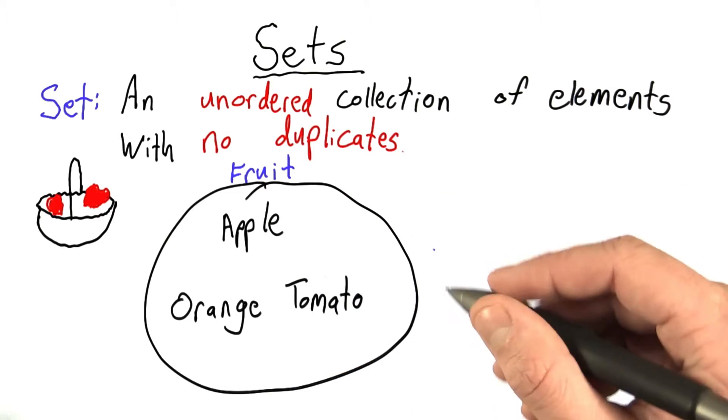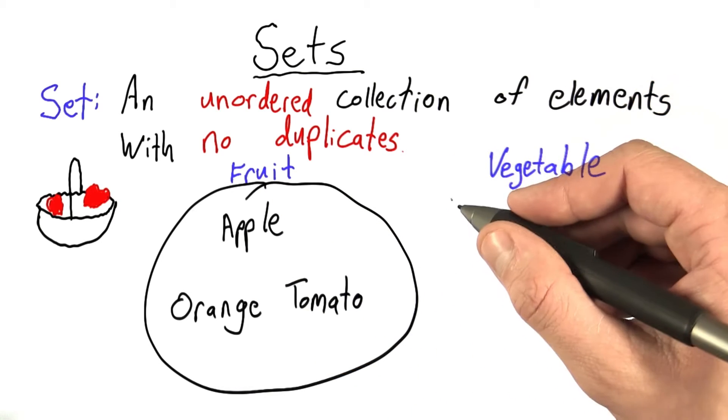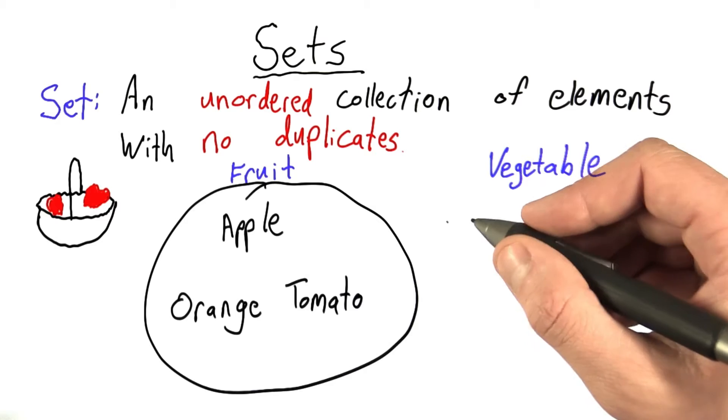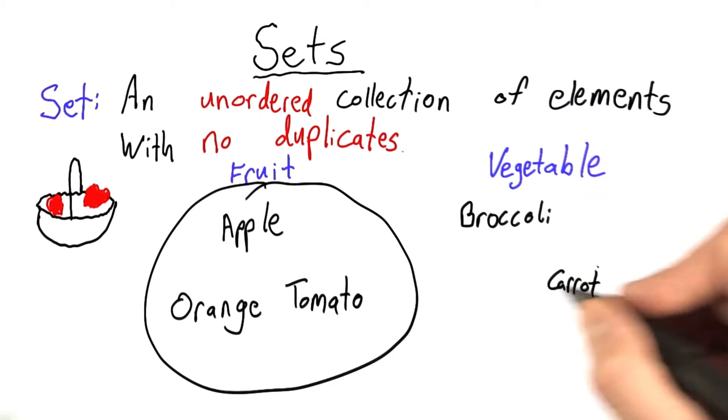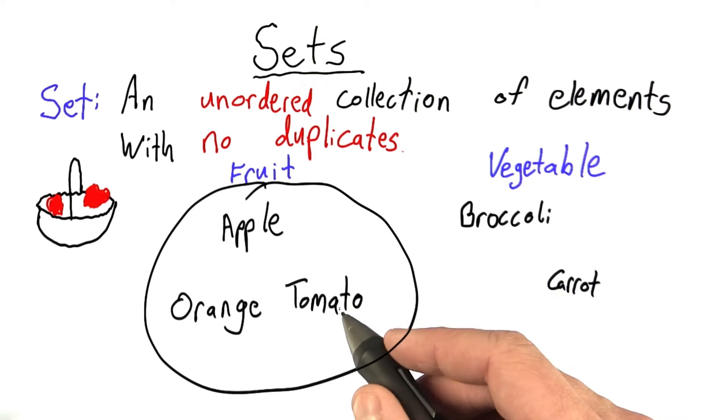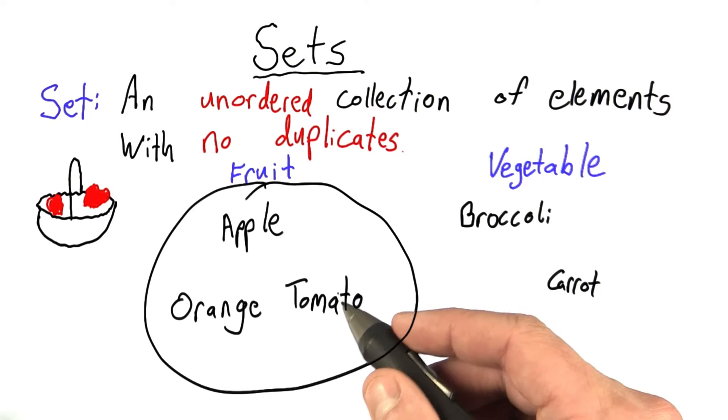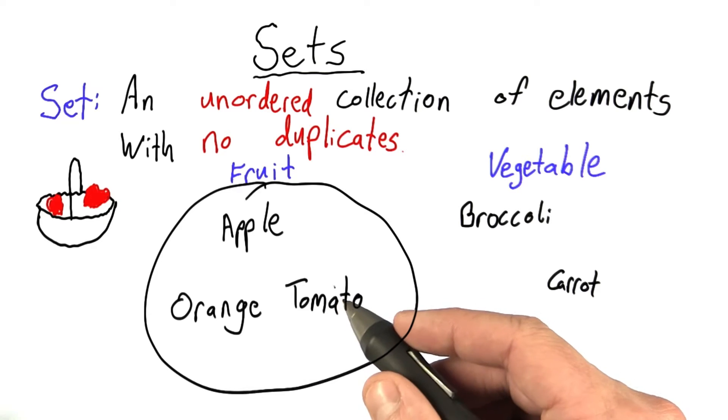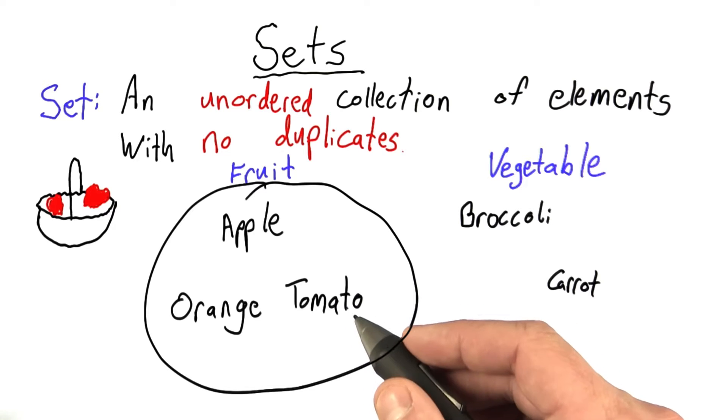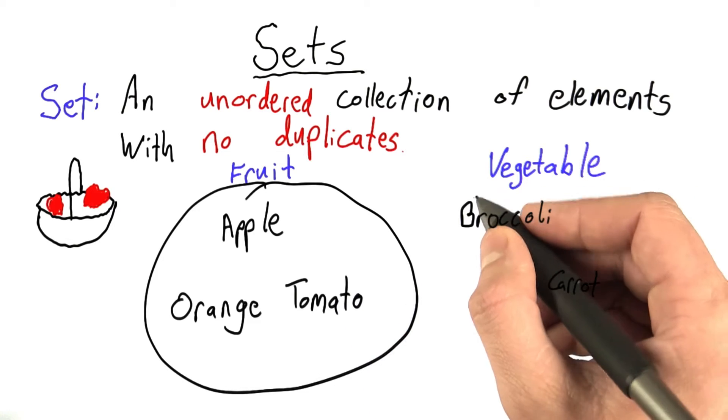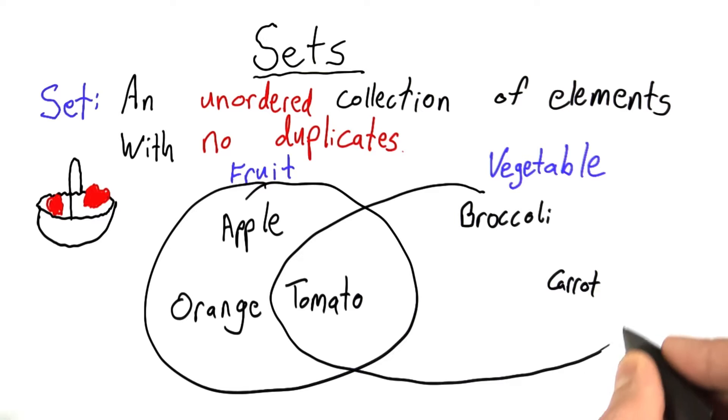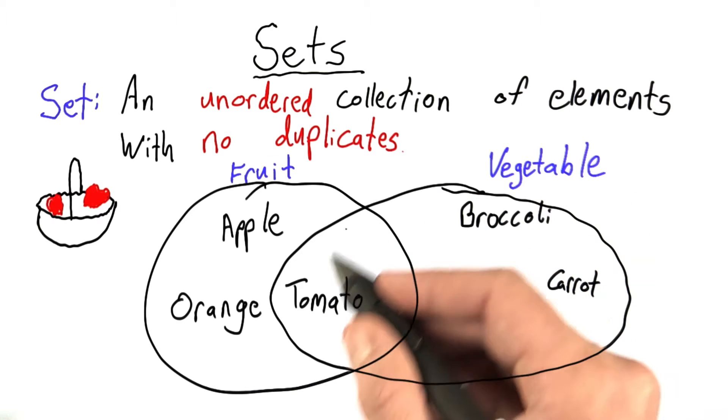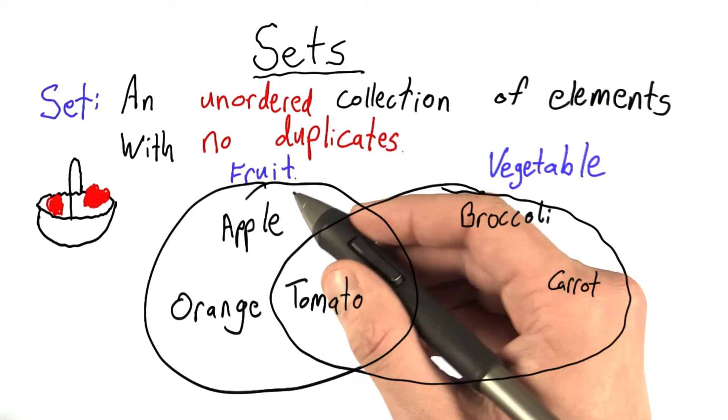Now, let's say we also have a set called vegetable, and some of the elements in this set would be broccoli, carrot, and tomato. When I was coming up with this question, there was some heated debate in the office about whether tomatoes are fruits or vegetables, so let's just include it in both. That means that when I draw the circle that encompasses this set, it actually has an overlap with the set fruit.